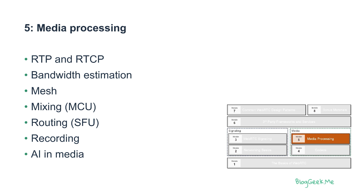Module five is where we start talking about media processing. We'll start with RTP and RTCP — the protocols used to actually send media over the network. Then we'll talk about bandwidth estimation and how that affects video processing. We'll have three lessons dealing with different media processing architectures: mesh, mixing, and routing. Most solutions today use routing for group calling, but mixing and mesh have an important place in WebRTC solutions — you'll need to know all of them to understand which to use when, and in many cases you'll use at least two of them.